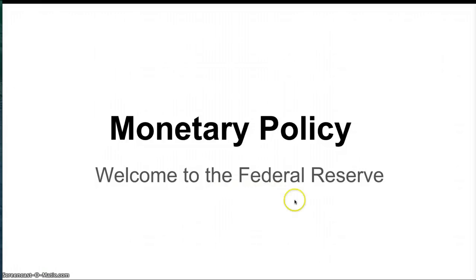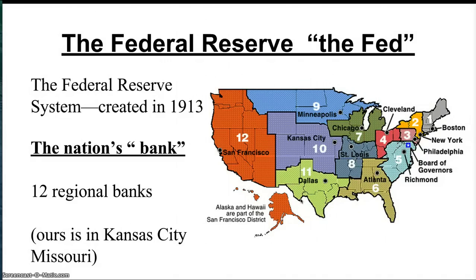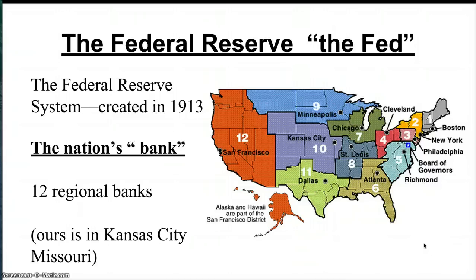Monetary policy is controlled by something called the Federal Reserve, so let me briefly go over that. The Federal Reserve is often known as the Fed — not the Feds, that's somebody else. The Fed is a governmental organization that has been around for quite a long time. Its basic purpose is to serve as the nation's bank, dividing the nation into 12 different regions, each with a regional bank controlled by the Fed to help regulate the economy.